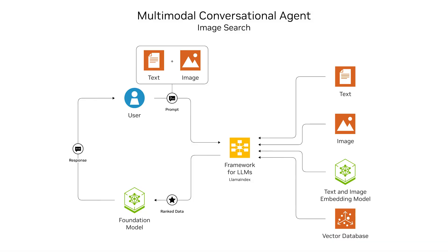The image search workflow looks very similar to our past tutorials. It's divided into two steps: an offline step and an online step. On the right-hand side is the offline step where we create the vector database. On the left-hand side, once we have the vector database, the user passes text and an image as their query. These are used to retrieve the most relevant images and generate a response for the user. The key difference is that we use an image embedding model to create embeddings from the images.